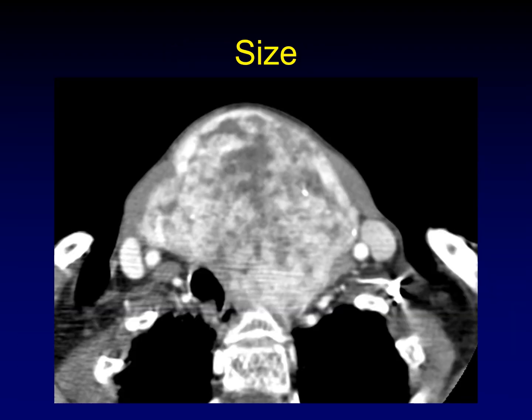It is amazing how large a goiter can become and still be benign. This one is a monster — you can see how it's distorting the anterior neck, and yet this is benign disease. It's all just a big adenoma.